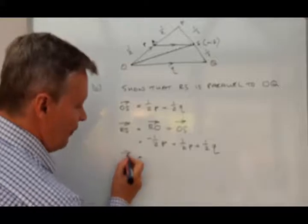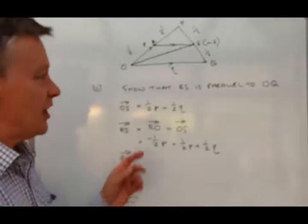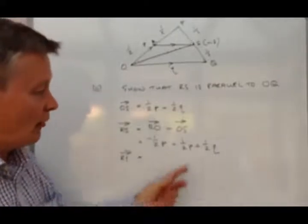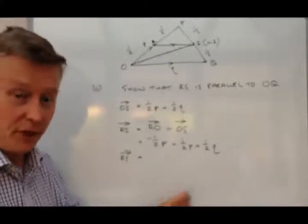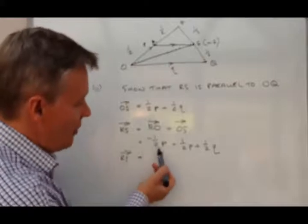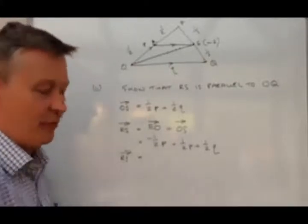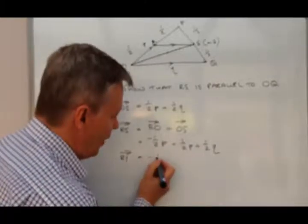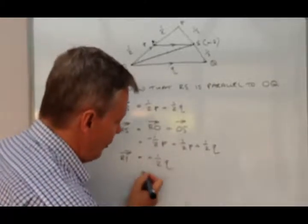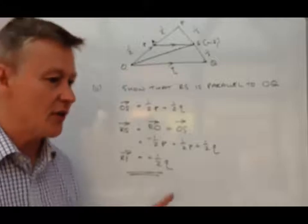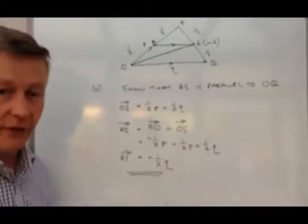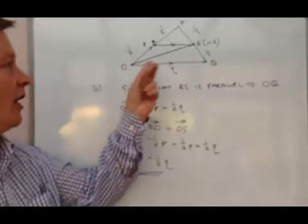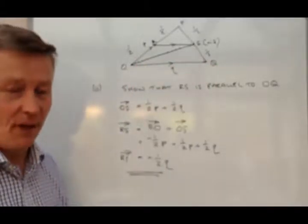OK, well, so that means then that vector RS, which if it's parallel to OQ is a multiple of Q, is actually a multiple of Q. Because you've got minus a half P plus a half P means it cancels itself out, and you're just left with a half Q. So therefore, because it's a multiple of Q, it's a half of Q, then it means it must be parallel to OQ at the bottom there.